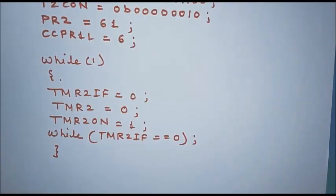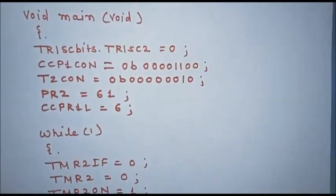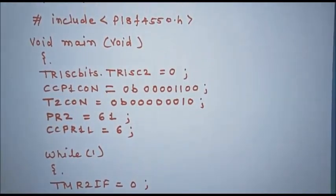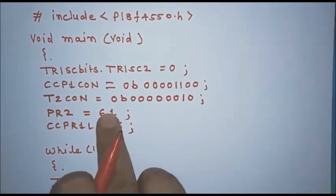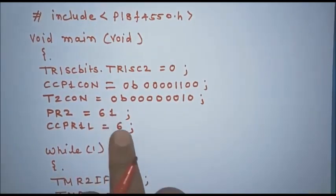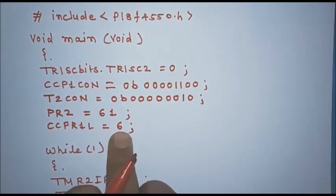This program will generate a PWM signal. To change the frequency of the PWM signal, change the count stored in PR2. To change the duty cycle, change the count stored in CCPR1L.